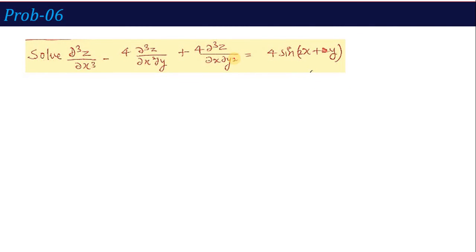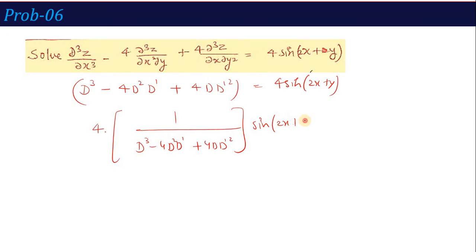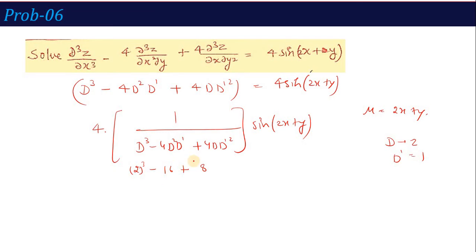For PI, we write PI = 4 × [1/(D³ - 4D²D' + 4DD'²)] sin(2x+y). Let u = 2x + y, so D → 2 and D' → 1. Substituting: 2³ - 4(2²)(1) + 4(2)(1²) = 8 - 16 + 8 = 0. The denominator evaluates to 0, which is a special case.